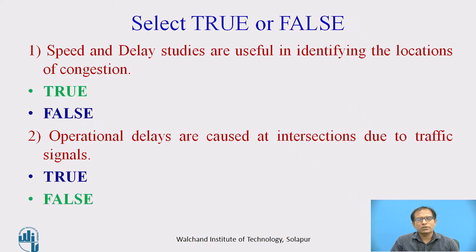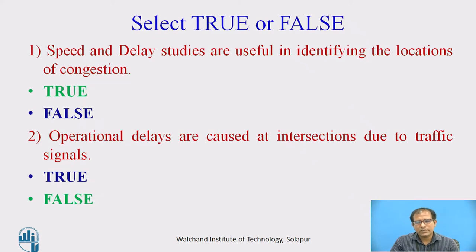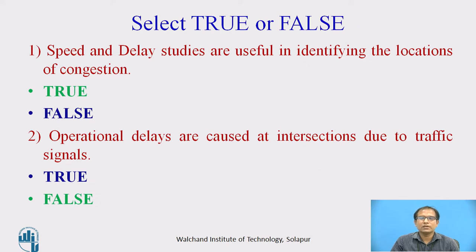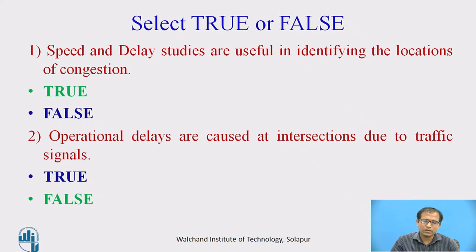The correct answer for the first one is true. Yes, speed and delay studies are useful in identifying the location of congestion. We also know the cause of the congestion and how much extent it has happened. For the second question, it is false because operation delays are caused due to the interference of the traffic stream, not traffic signals.